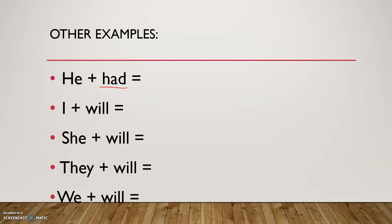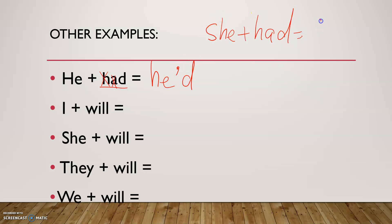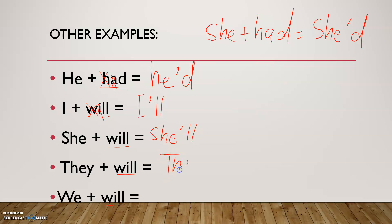Had is also easy and applies to all pronouns because it's past tense. He had: we cross A and H just like in has and have — he'd. She had becomes she'd, and so on. For will: I will, she will, they will, we will, you will, it will — all the same. In 'will', we cross W and I and keep the double L. So I will becomes I'll, she will becomes she'll, they will becomes they'll, we will becomes we'll.